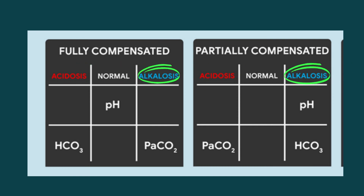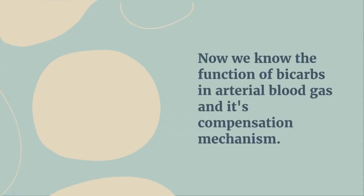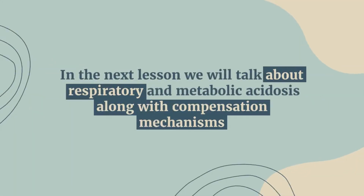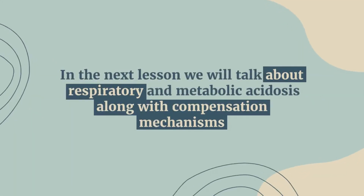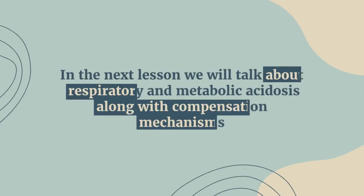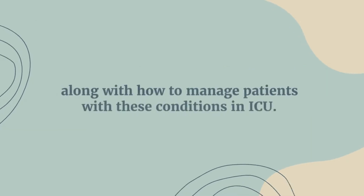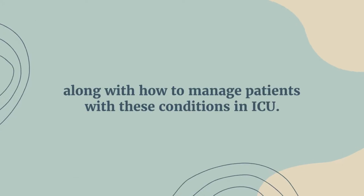Similarly, in the case of metabolic alkalosis, CO2 rises in order to maintain the pH of the blood and compensate for increased levels of bicarbs. Now we know the function of bicarbs in arterial blood gas and its compensation mechanism. In the next lesson, we will talk about respiratory and metabolic acidosis, along with compensation mechanisms and how to manage patients with these conditions in the ICU.